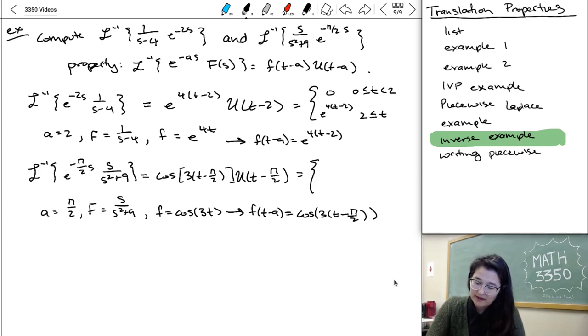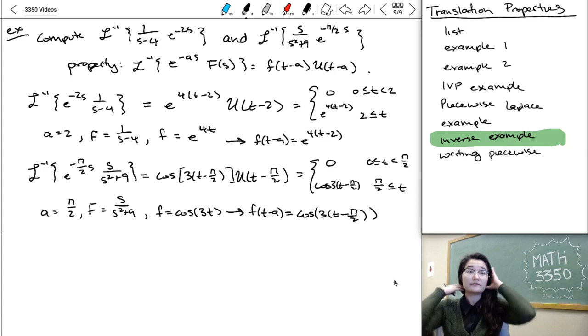And then again, if we wanted to write this piecewise, it's zero until we hit that pi over two. And then after that, it's gonna take on the F value cosine of three T minus pi over two. And that's how we use the inverse property for the piecewise or step functions.